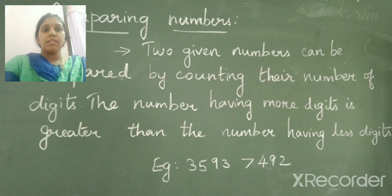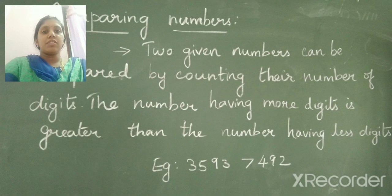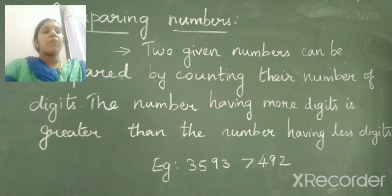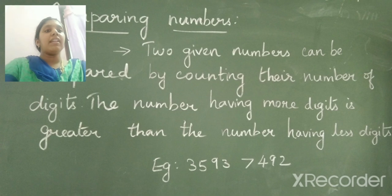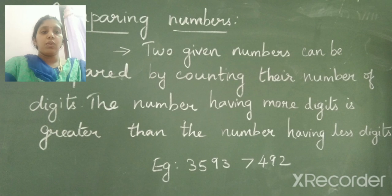So comparing numbers. How can we compare two given numbers? We are going to see today. Two given numbers can be compared by counting their number of digits. The number having more digit is greater than the number having less digit. If two numbers are given, first we have to count the number of digits in the two numbers.